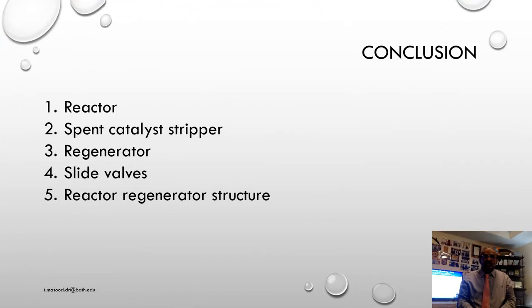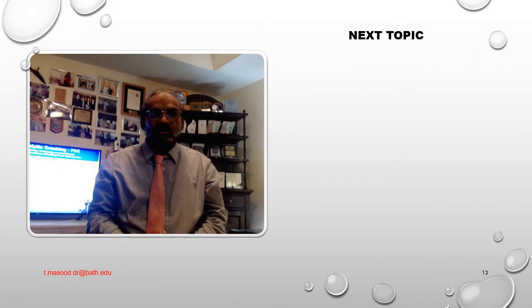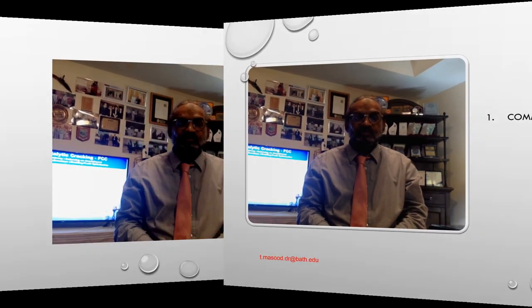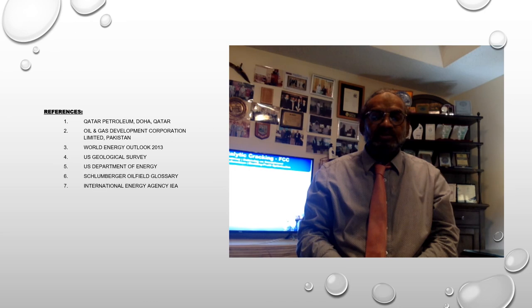Conclusion: today we discussed the reactor, spent catalyst stripper, regenerator, slide valves, and reactor-regenerator structure. The next topic we are going to discuss is the commissioning of utilities. These are a few references.